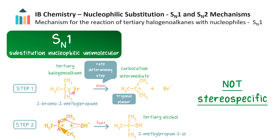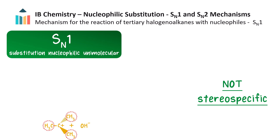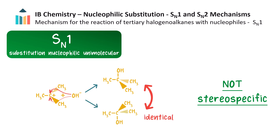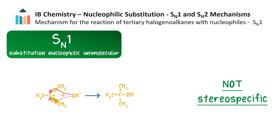Since the carbocation is trigonal planar and can be attacked from either side of the plane by the nucleophile, an SN1 mechanism is not stereospecific. In this example, the three R groups are the same, and so regardless of which side of the plane the nucleophile attacks — either from the top to form this molecule or from the bottom to form this molecule — the two organic product molecules are identical in every way, and so we can represent it without any information on its 3D configuration.